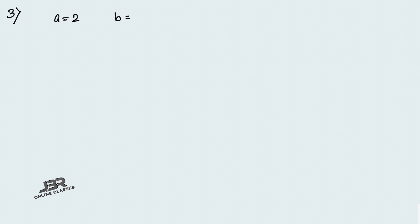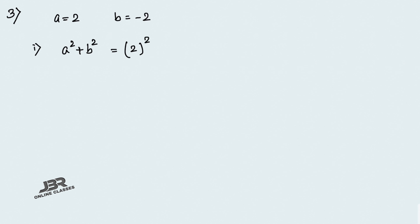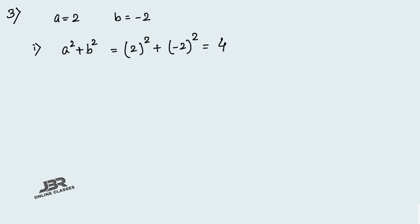Sum number 3: if a equals 2 and b equals minus 2, find the value. First: a² plus b². So 2² plus (minus 2)². Now 2² equals 4, and (minus 2)² — power is even, so positive — equals 4. So 4 plus 4 equals 8.